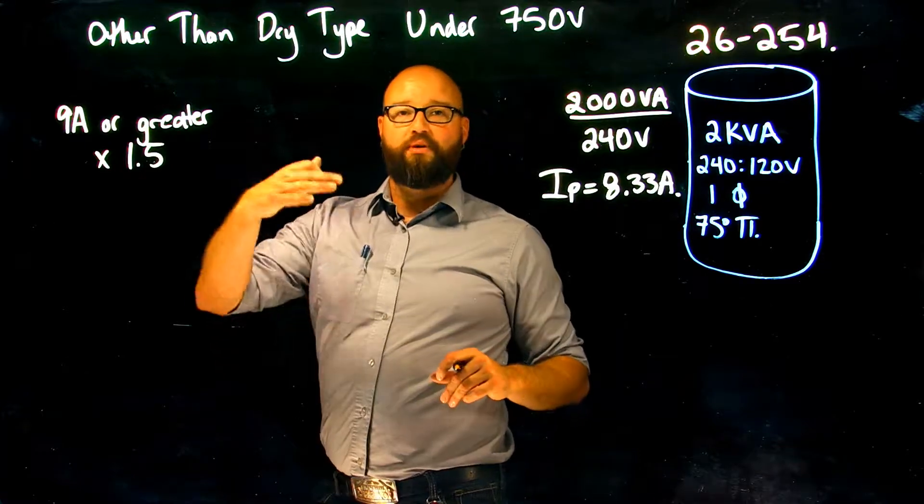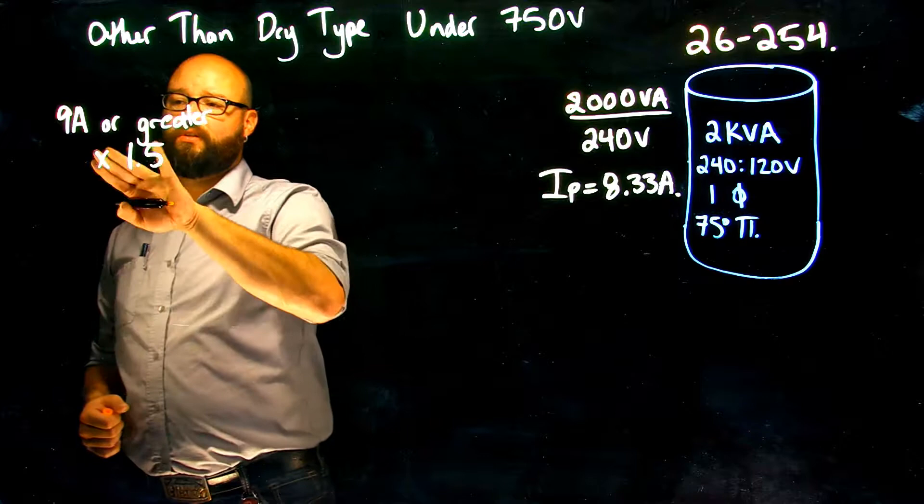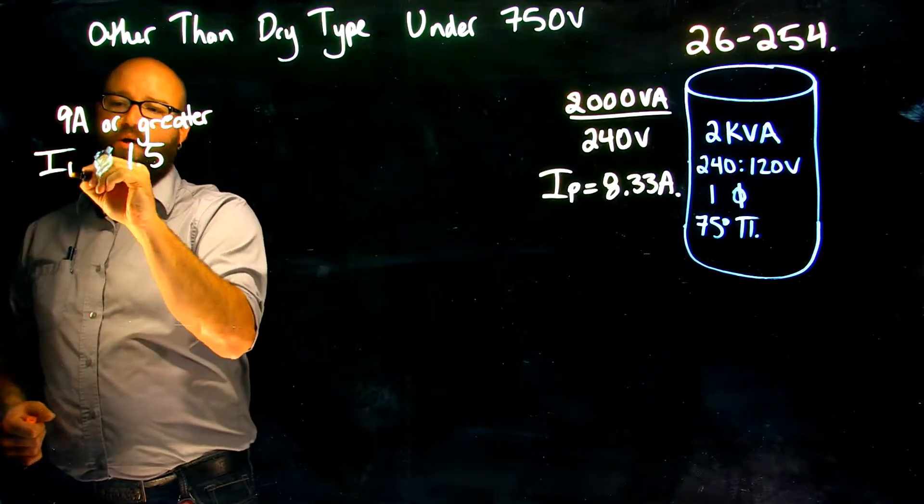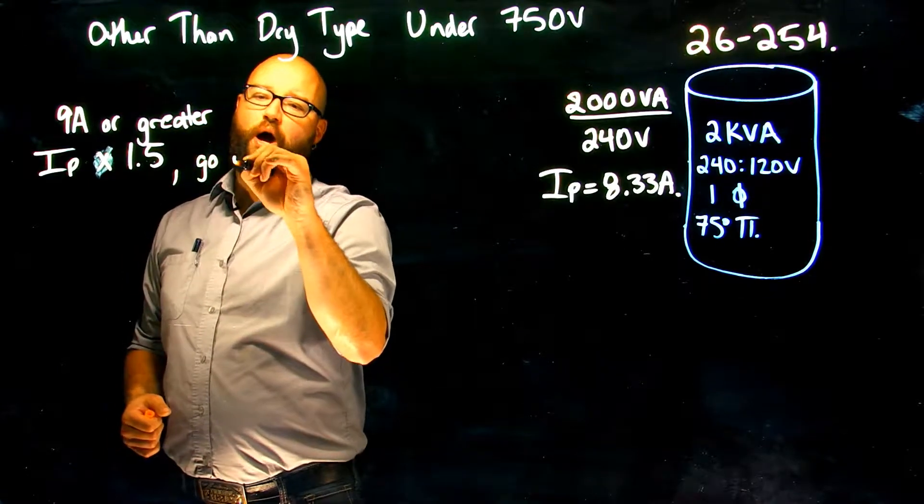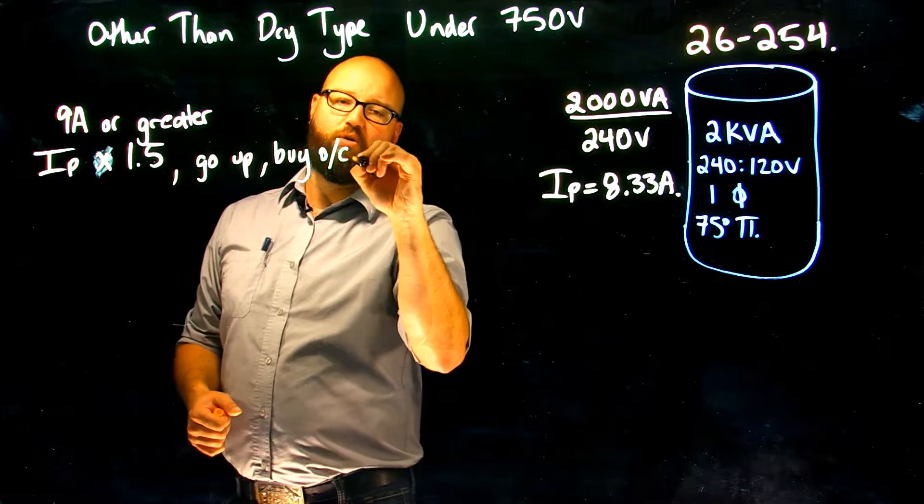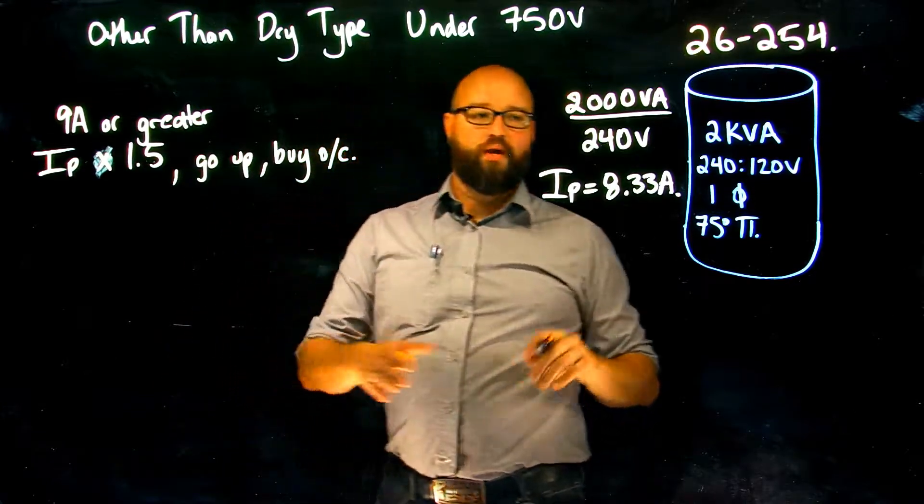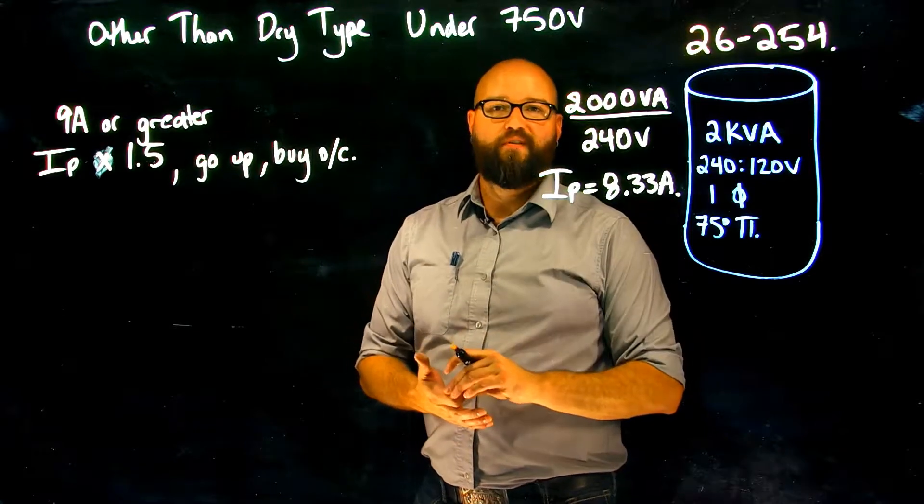And if we read further on, it tells me if that size is not available I am allowed to go up and select the next available size. So times 1.5, so I primary times 1.5, go up by overcurrent.